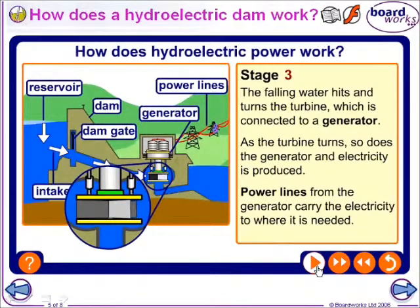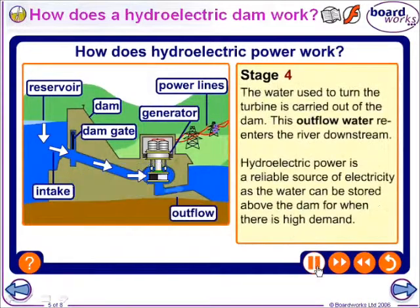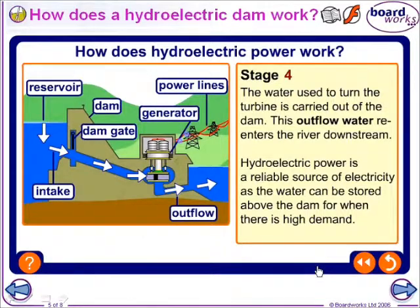Power lines from the generator carry the electricity to where it is used. The water used to turn the turbine is carried out of the dam, and this outflow water re-enters the river downstream. Hydroelectric power is a reliable source of electricity as the water can be stored above the dam for when there is a high demand.